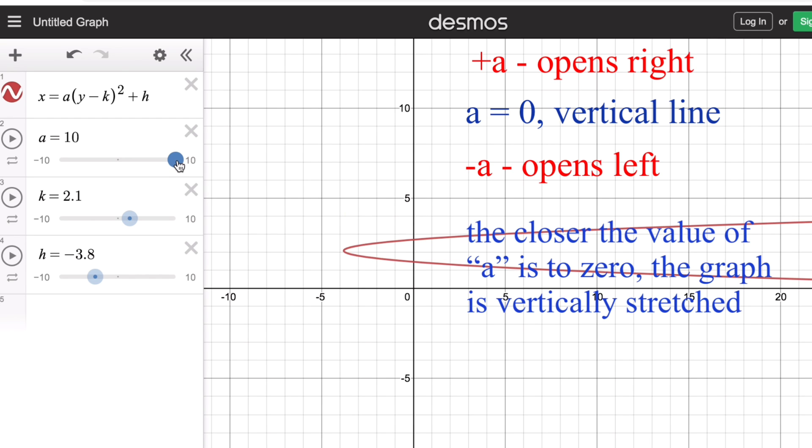Similarly, if we start from a = 10, then go towards zero, changing the value of a towards zero, we can see the graph again becomes vertically stretched. That means it becomes more and more vertical up to the point that it turns into a vertical line when a is zero.